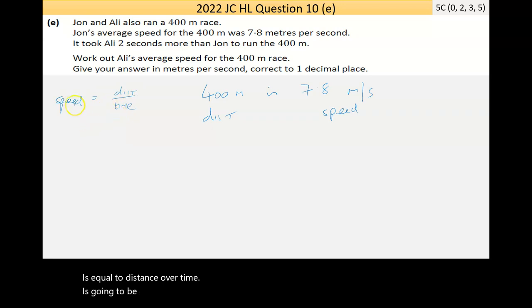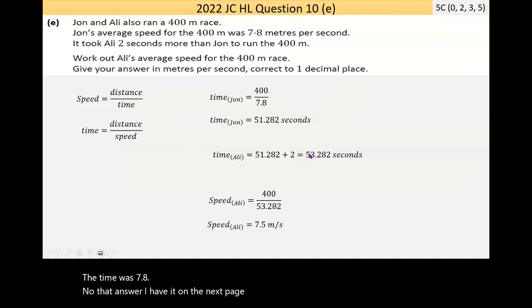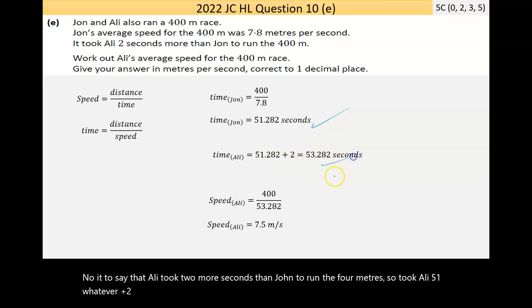So the formula here, speed is equal to distance over time is going to be useful to us. Now we can rearrange this. I can bring time across and time is equal to distance over speed. So if I want to work out the time for John, the distance he traveled was 400. The speed was 7.8. Now that answer, I have it on the next page. The answer is 51.282 seconds. Now they say that Ali took two more seconds than John to run the 400 meters. So it took Ali 51, whatever, plus two, which is 53.282 seconds.